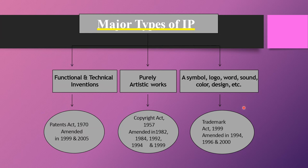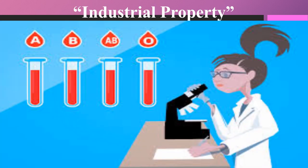Industrial property describes physical matter that are products of ideas and concepts for commercial purposes. They are protected by patented objects, trademarks, industrial design, trade secrets, layout design, and geographical indication.